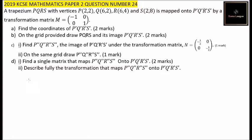Question number 24: we are told that trapezium PQRS with vertices P(2,2), Q(6,2), R(6,4), and S(2,8) is mapped onto P'Q'R'S' by a transformation matrix M = [-1, 0; 0, 1]. Find the coordinates of P'Q'R'S'.